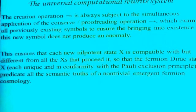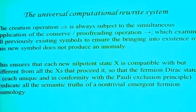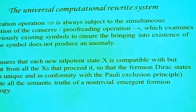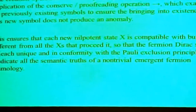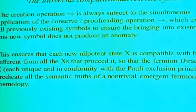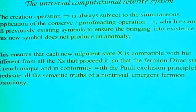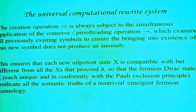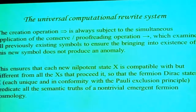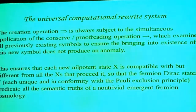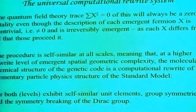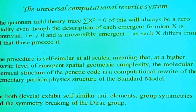The creation needs a simultaneous application of a proofreading conservation operation, which makes it possible to show that the new symbol isn't an anomaly. Each new nilpotent state x is compatible but different from all previous ones, so that the fermion Dirac states are each unique and conform to the exclusion principle, predicating all the semantic truths. It's a non-trivial emergent fermion cosmology.